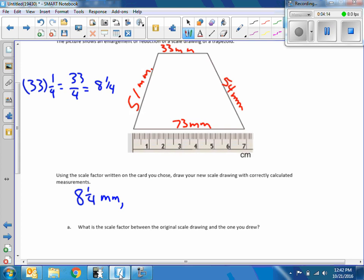I'm going to go around clockwise. 54 times a quarter equals 54 over 4. 4 goes into 5 once, 4 goes into 14 three times—13.5 or 13 and a half. So that's 13 and a half millimeters.